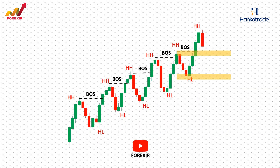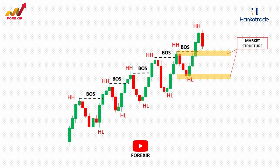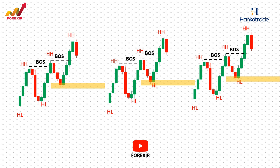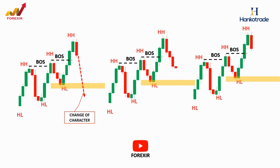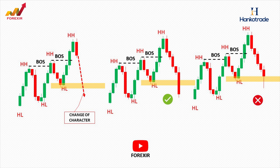Suppose we have a bullish market where prices consistently make a series of higher highs and higher lows. In this scenario, each high and low serves as a significant market structure level. The most recent higher high and higher low are the ones we closely monitor. If there's a break below the most recent higher low, it indicates that the price is potentially shifting to the downside and attempting to change its primary direction. This is what we consider a change of character in the market. The key point for a valid change of character is that we require the price to break and close a candle below the previous market structure level. This confirms the shift in market dynamics. If the price breaks the most recent market structure level with a shadow or wick and closes back within the range of that structure level, then our change of character is considered invalid. This principle holds true for both bullish and bearish scenarios. It underscores the importance of not only the break, but also the confirmation through a candlestick close outside the structure level.